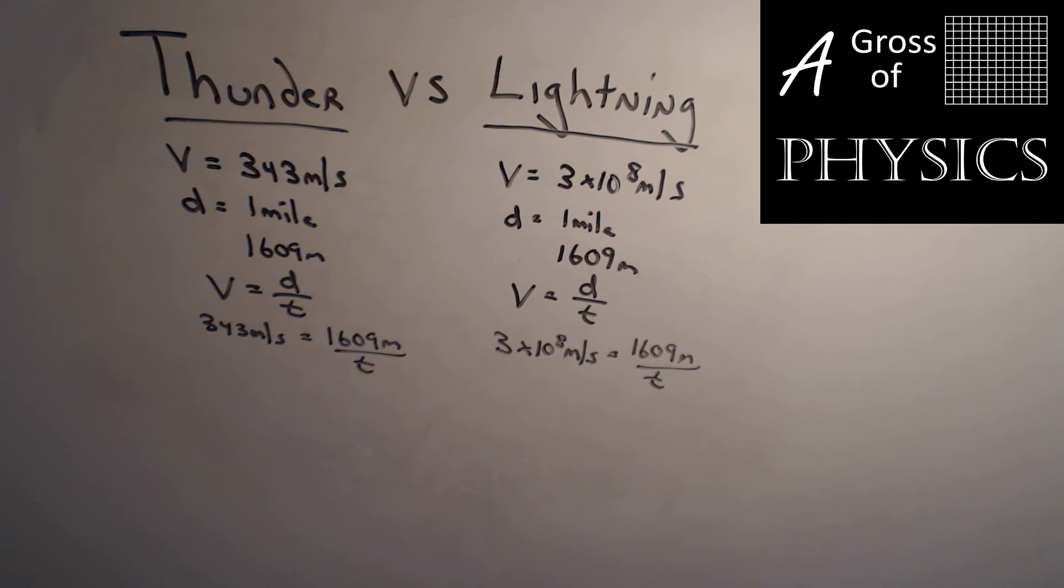For the sound we'll do 1609 divided by 343 and we're going to get 4.7 seconds. For light, we're going to do 1609 divided by 3 times 10 to the 8 and we're going to get 5.36 times 10 to the negative 6 seconds, which is 0.000000536 seconds. So we're going to consider that almost instantaneous in terms of a mile. So that's really fast. 4.7 seconds. So when you're counting between the lightning and the thunderclap, there is about 5 seconds.